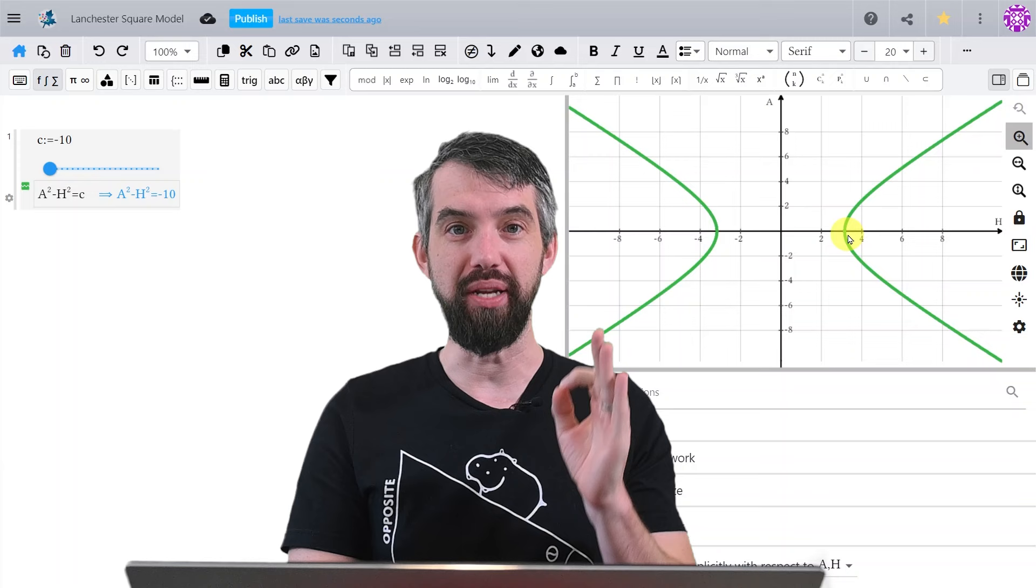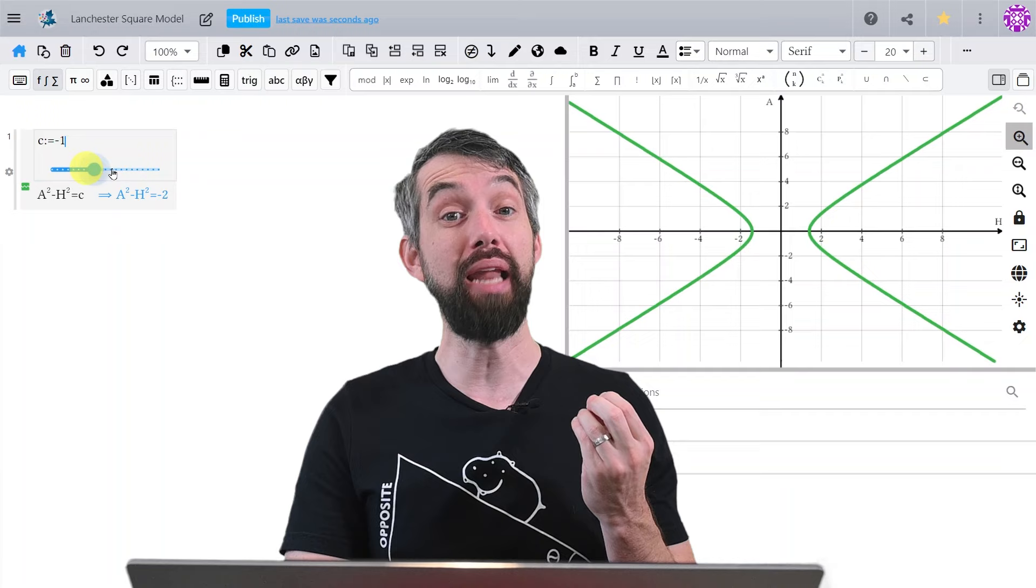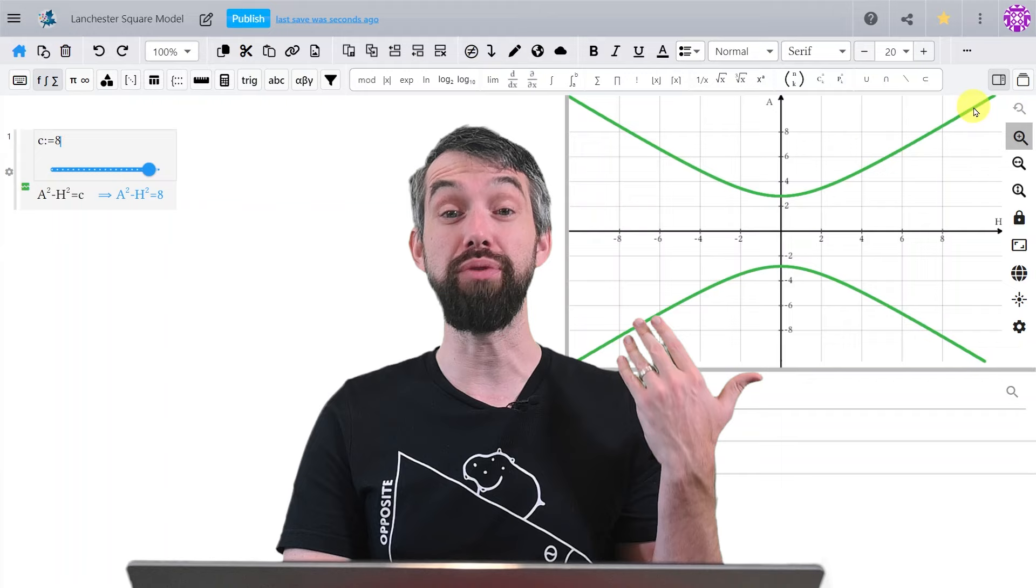If I change the value of the constant and stop it from being negative, but now make it positive, this is the scenario where the aliens win. Because as I go down the curve, it ends up with zero humans and a non-zero amount of aliens.